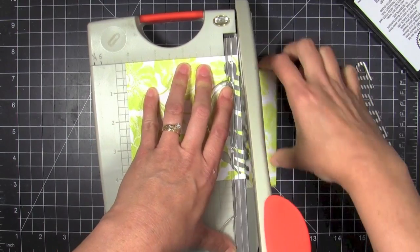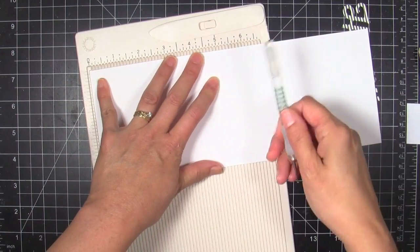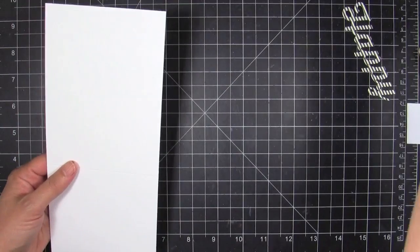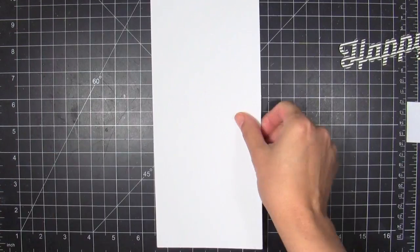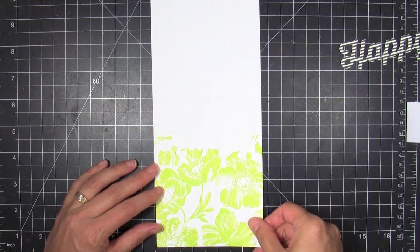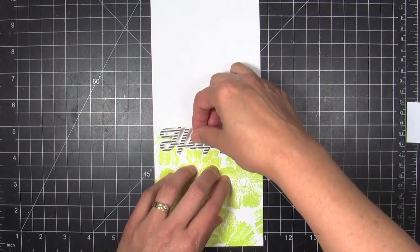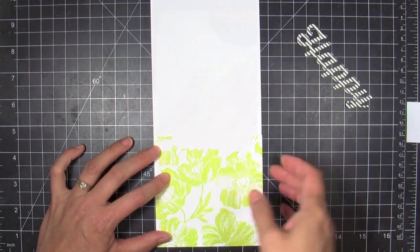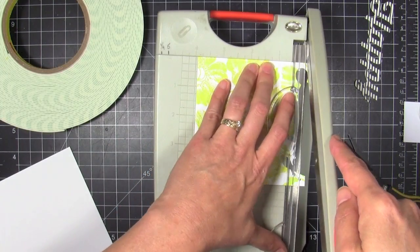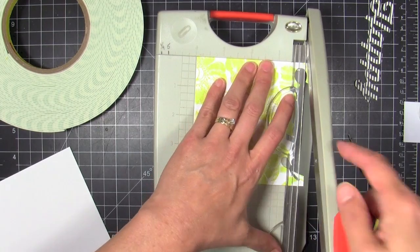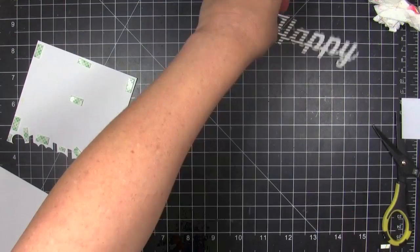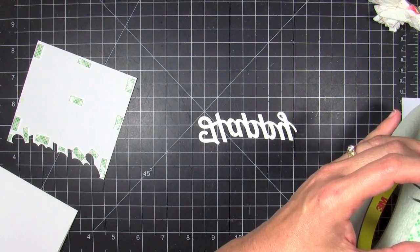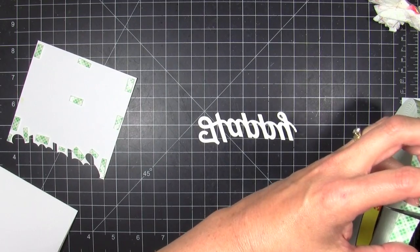Then I'm gonna take some white linen cardstock just for some added texture. I love the heavy weight of this paper and it's gonna be my base card. I'm just gonna check the layout and see how it's going. I decided in the end I wanted to trim off a little bit more of the green there so I'll just take it back to my guillotine trimmer and just cut away just a smidge more.